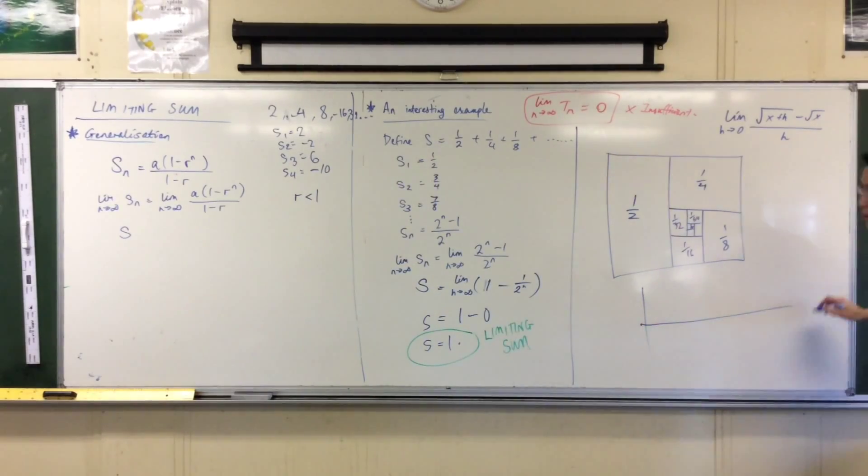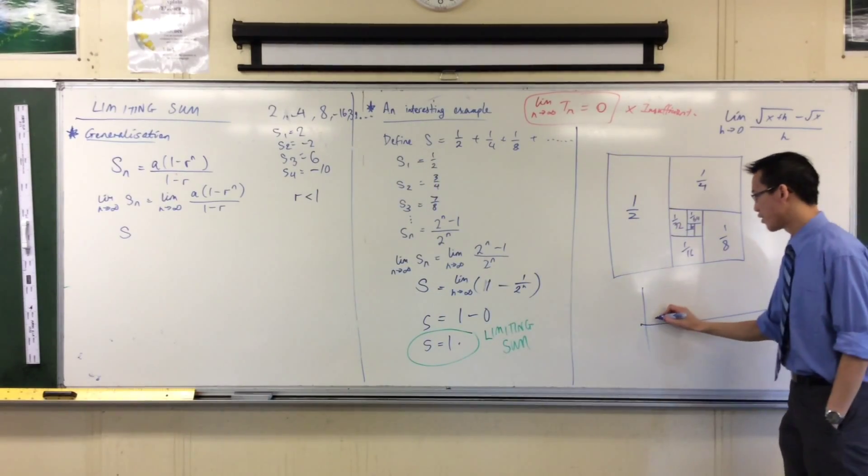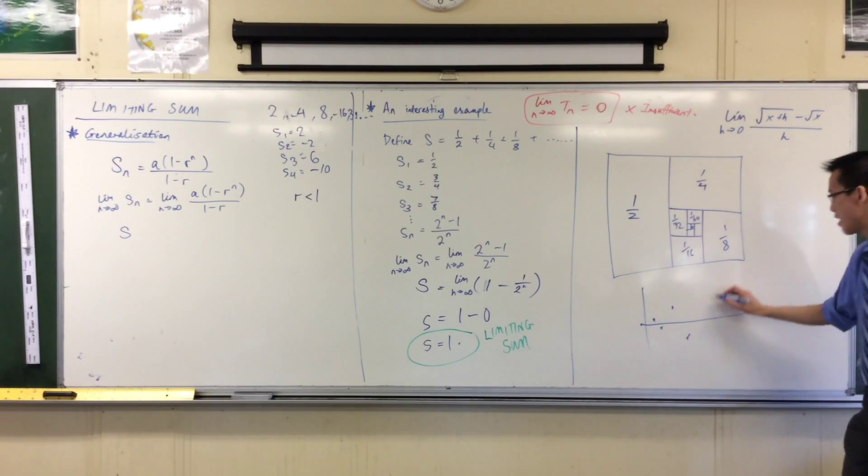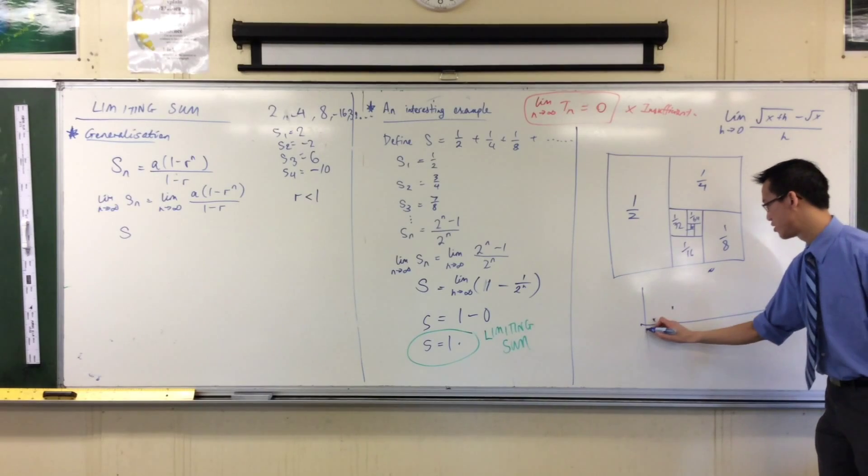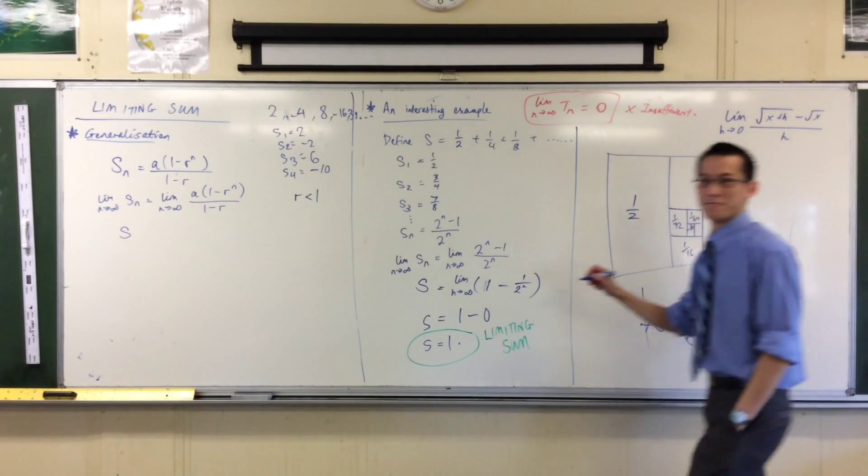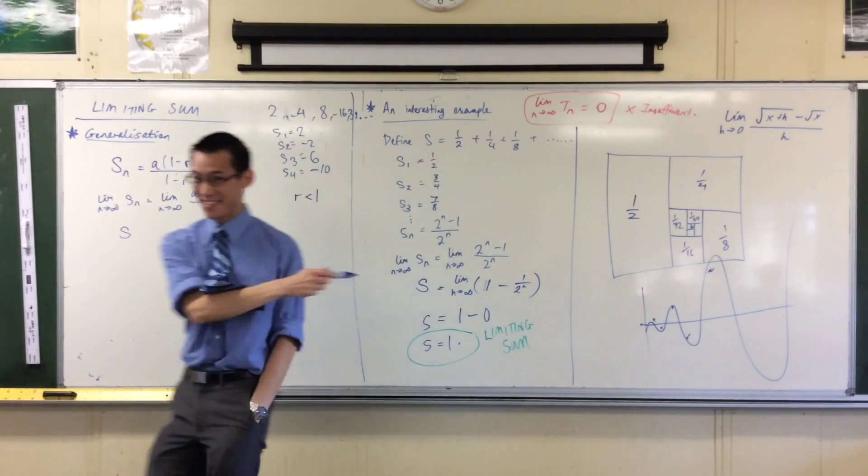here we go. What would it look like? I'd go, 2, and then negative 2, and then 6, and then negative 10, and then 22. It's doing something like this. If there's anything that's diverging, that's diverging, okay?